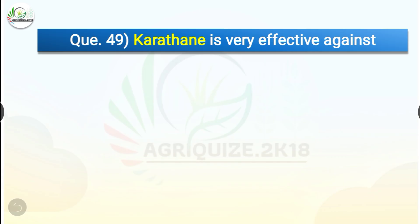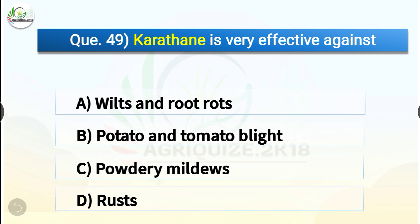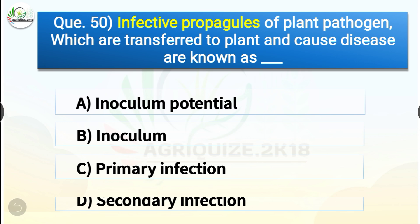Question number forty-nine: Karathane is very effective against dash. The options are wilts and root rots, potato and tomato blight, powdery mildews, or rust. The correct answer is option C, powdery mildews. Karathane is a contact fungicide with limited penetrant activity. It has protective, curative, and eradicant action against powdery mildew disease. It is significantly better at controlling powdery mildew infestation on woody plants.